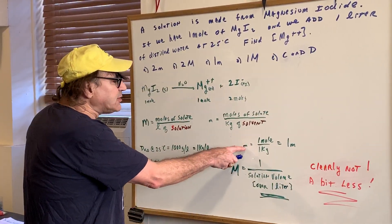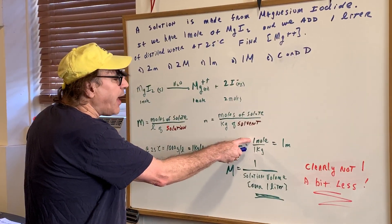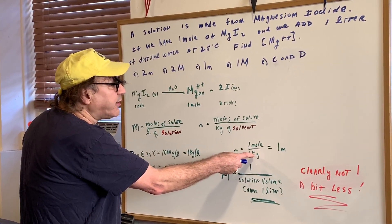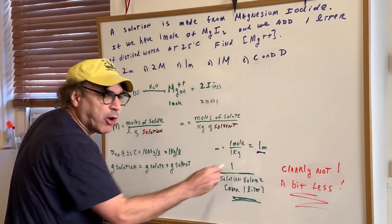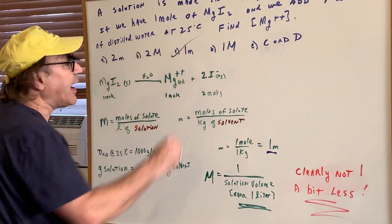So therefore we're going to first calculate little m. Little m is one mole over one kilogram, because one liter of water is one kilogram, and that gives us one molal. So we know that has to be correct.